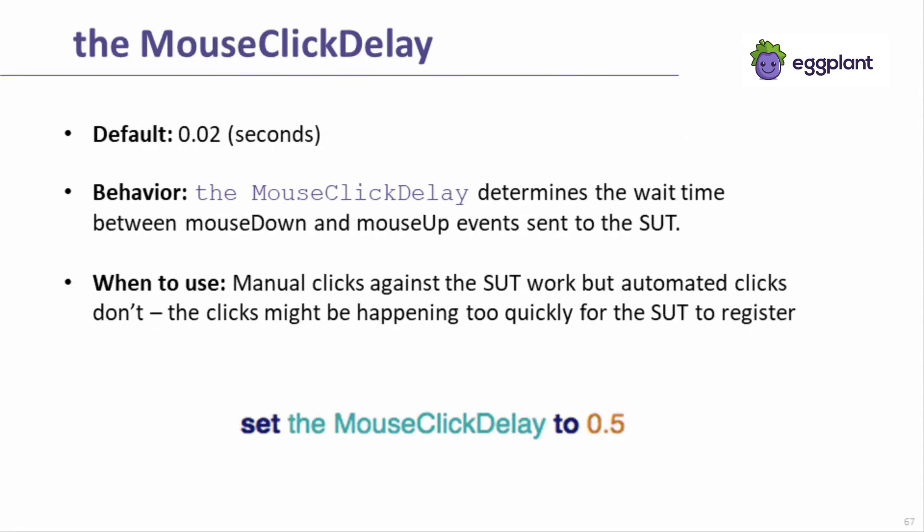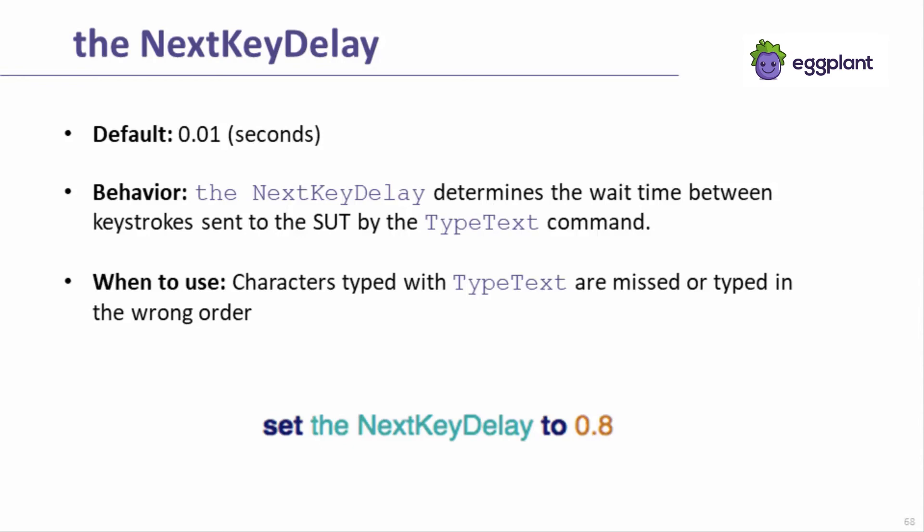The mouse click delay is a setting that controls the wait time between the mouse down and mouse up events that make up a single click. The default value is .02 seconds, which can be too fast for some applications under test. If you see issues where Eggplant is sending a click but the SUT is not reacting to the event, consider increasing the mouse click delay. The next key delay controls the wait time between each keystroke sent to the SUT by a single type text command. The default value of .01 can be much too fast for some applications, especially if the field being typed into uses some backend processing such as autocomplete. If you see skipped characters or misordered characters when using type text, consider slowing down the next key delay.